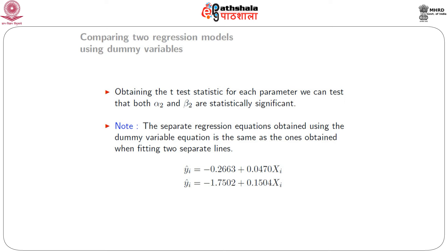Since α̂₂ and β̂₂ are statistically significant, we conclude there is a statistical difference between the two regression models. For the first period, the model is: Ŷ_t = (-1.7502 + 1.4839) + (0.1504 - 0.1034)X_t = -0.2663 + 0.0470X_t. For the second period: Ŷ_t = -1.7502 + 0.1504X_t. Readers who fit the models separately and perform the Chow test on the same dataset will obtain the same two regression models, confirming both approaches yield identical results.